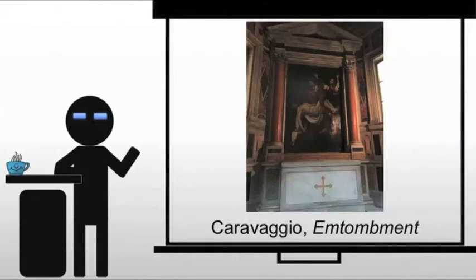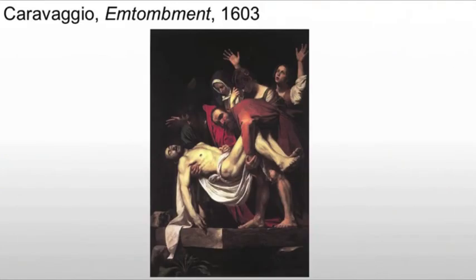Caravaggio's Entombment is an interesting piece, not because of the subject necessarily, but the complications he's putting into it, the deep theology that's going into it, as well as its setting over an altar. The work has all the characteristics of Caravaggio: plebeian figures, dramatic lighting, and the invitation for the viewer to participate in the scene.